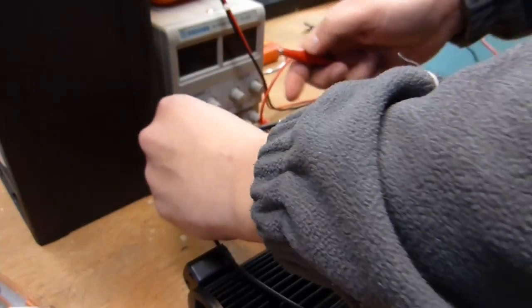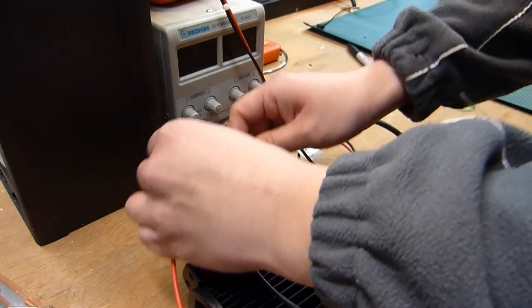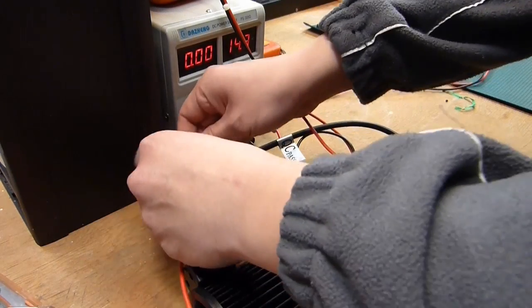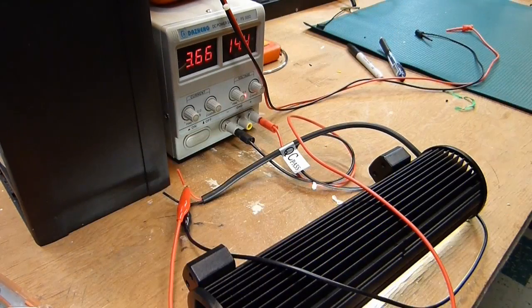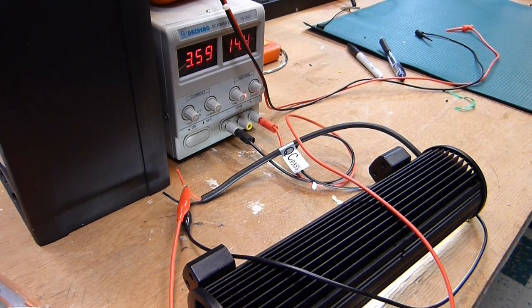Welcome back to MEGA MECHATRONICS. We're going to tear down this value LED light bar rated at 70 watts. I paid around $30 for it. So we're going to hook it up to our adjustable DC power supply and see what this thing is actually pulling.